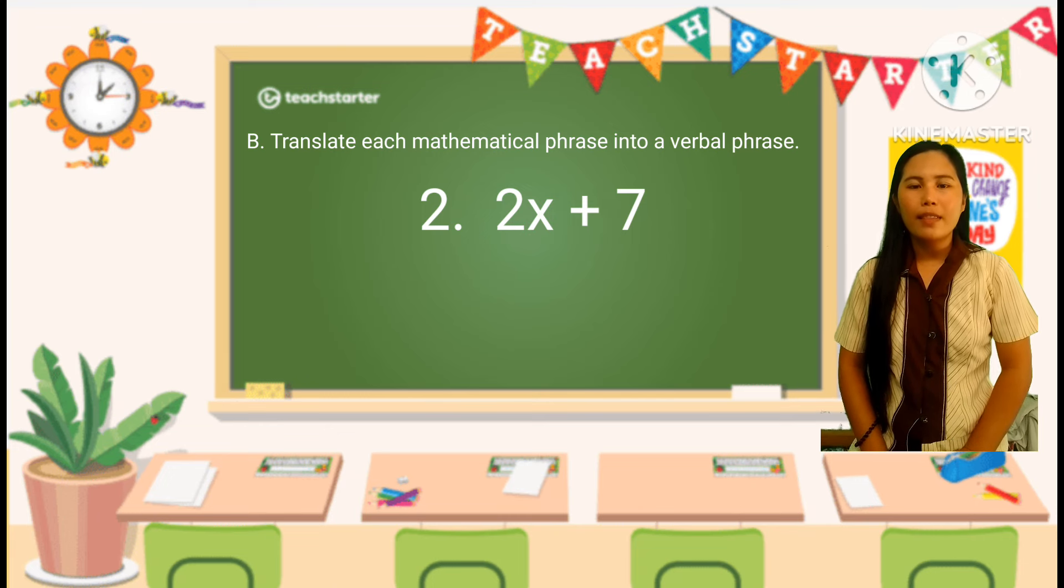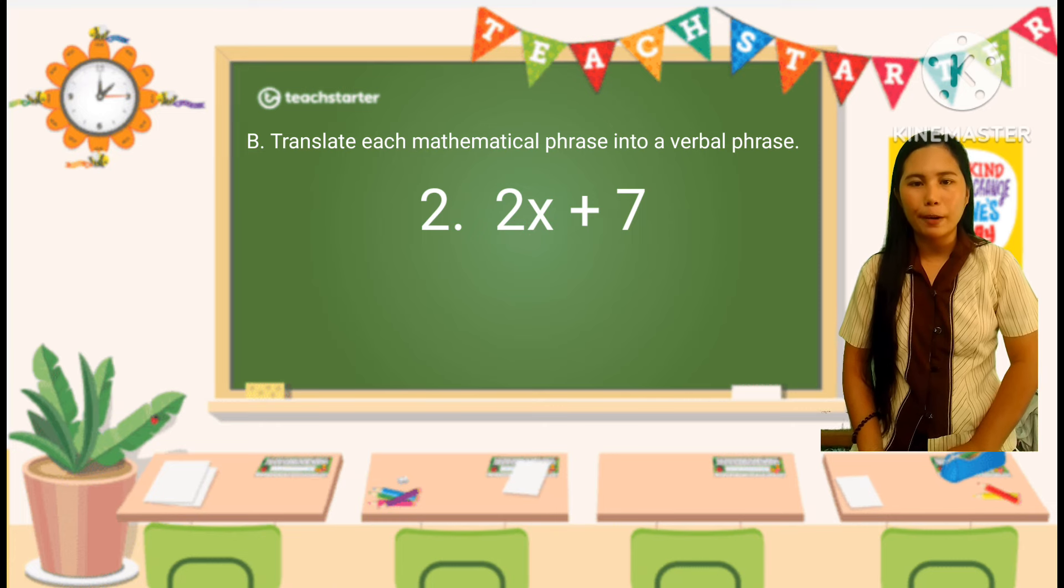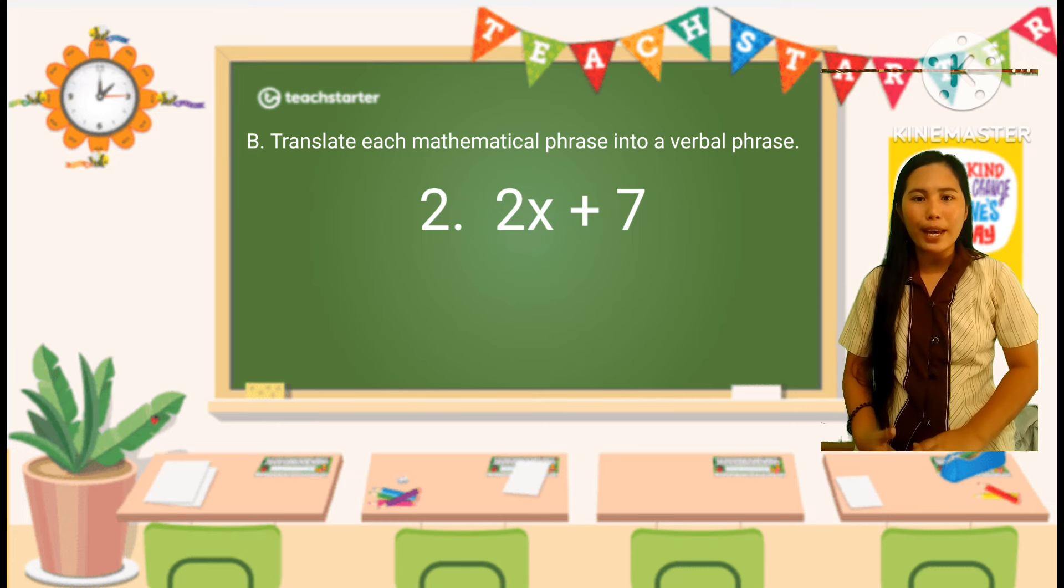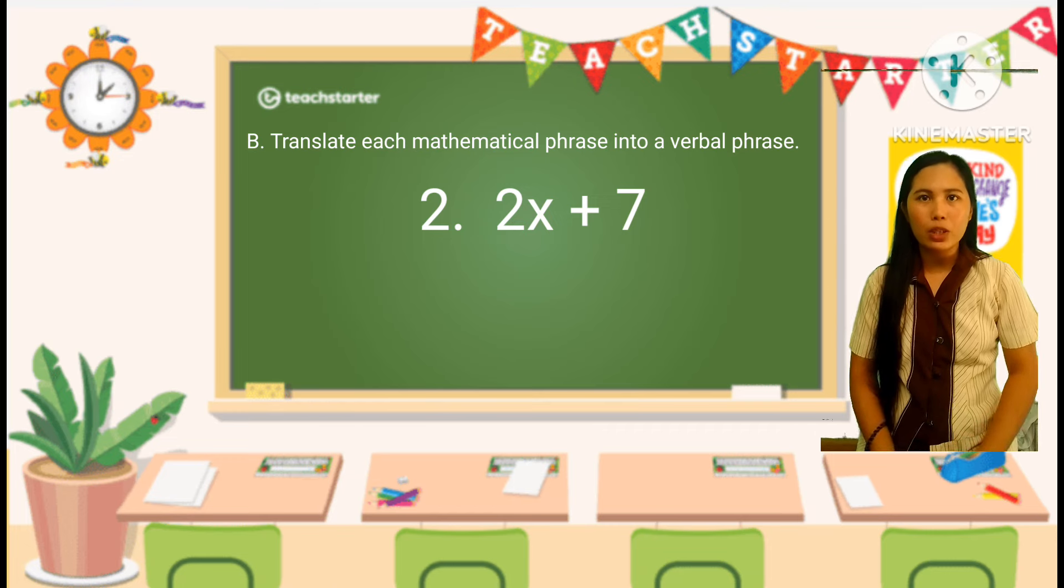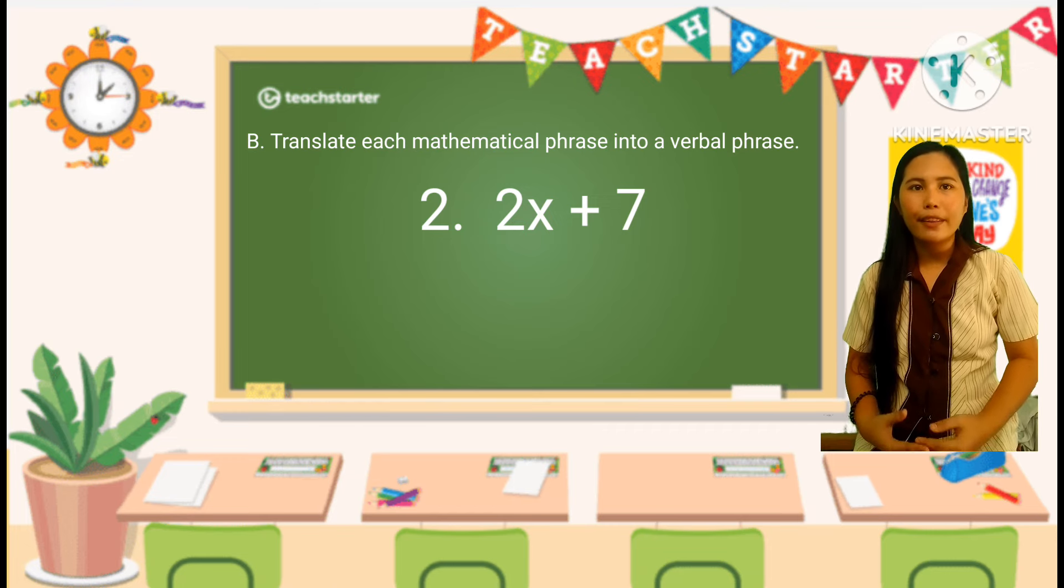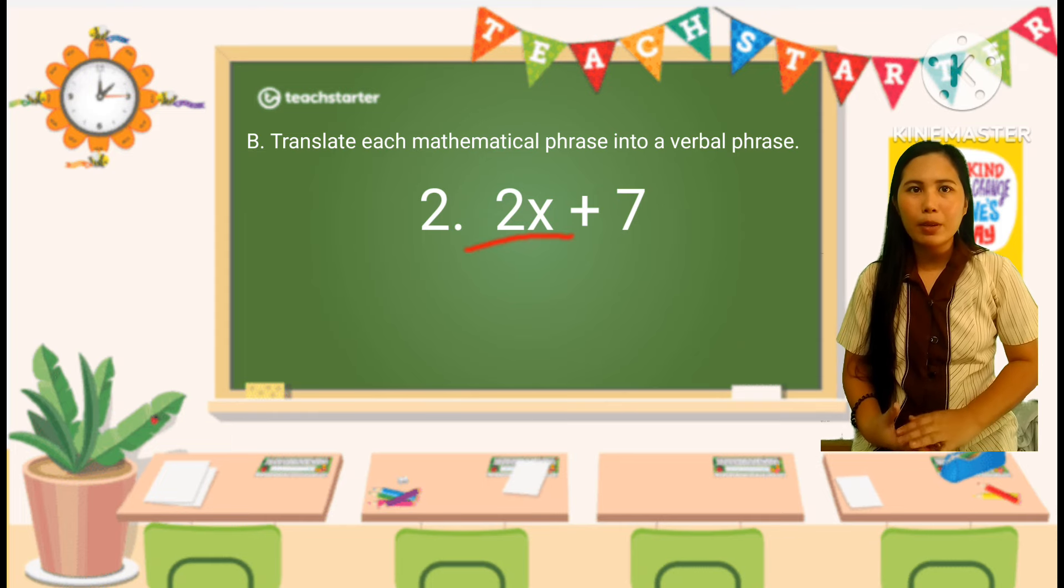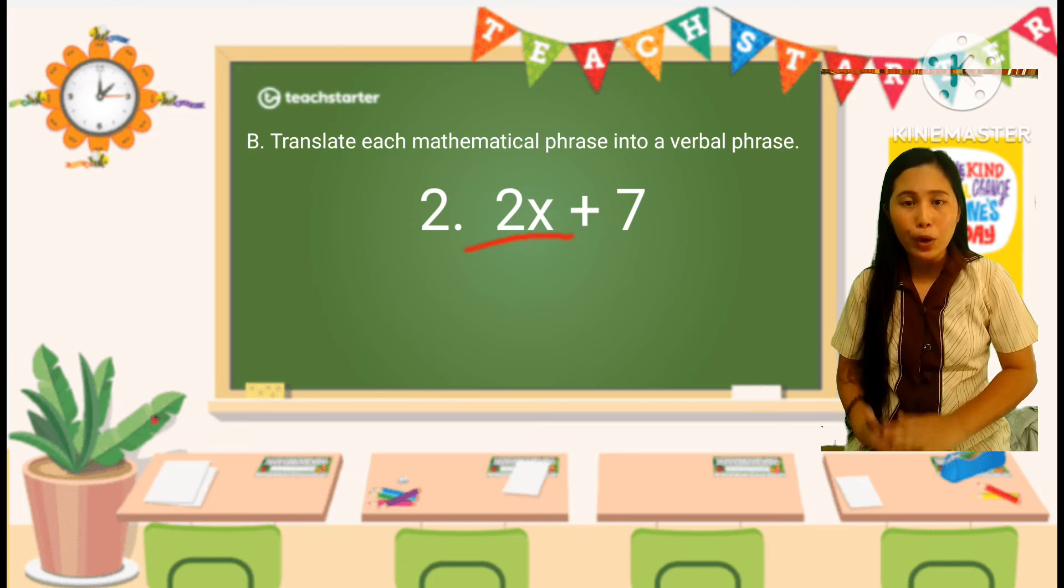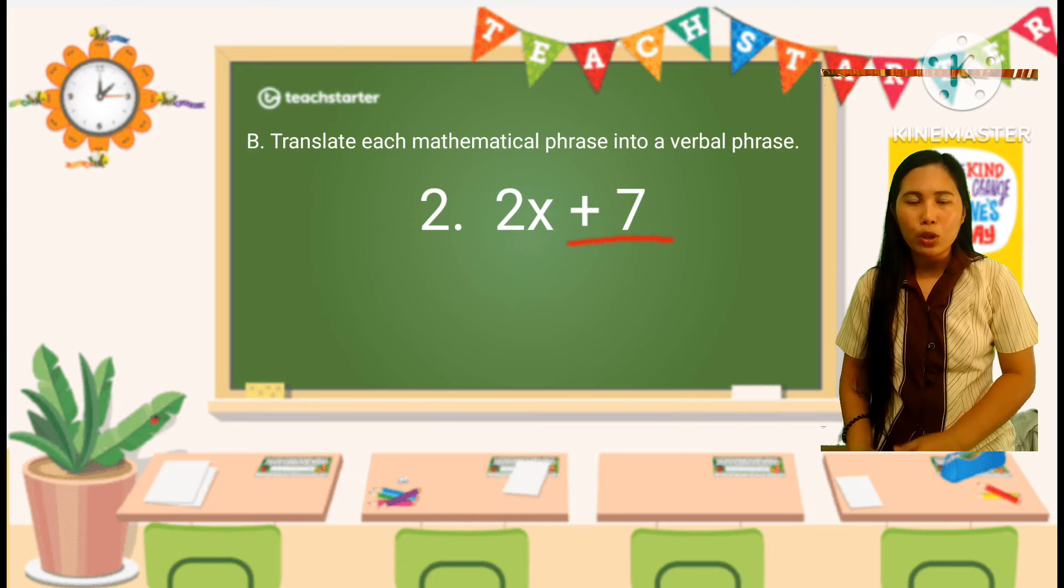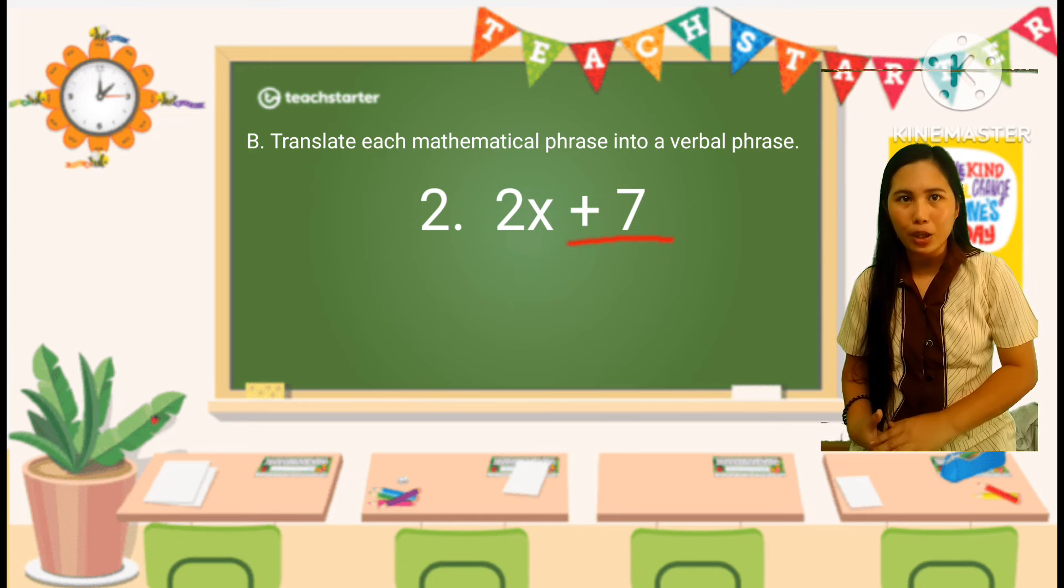So, here is number 2 example on how to translate mathematical phrases to verbal phrases. To convert mathematical expression 2x plus 7 into a verbal phrase, you can follow their steps. Number 1, identify the parts of expression. 2x, this consists of the product of 2 and x, meaning x is multiplied by 2. 7, this term is being added to the previous term.